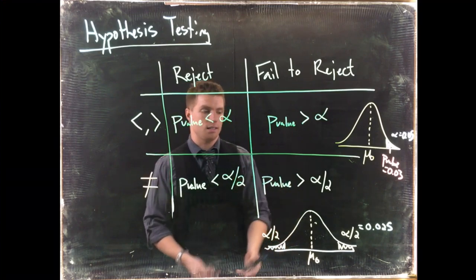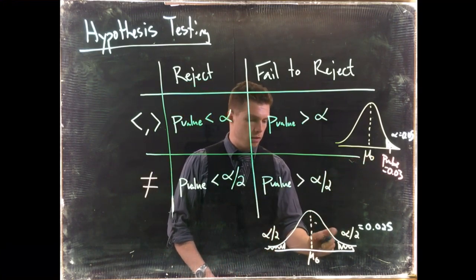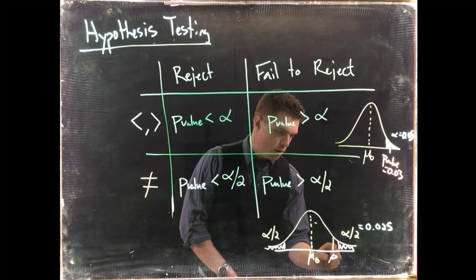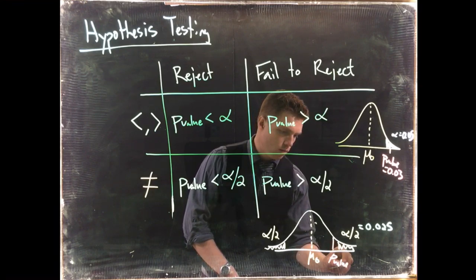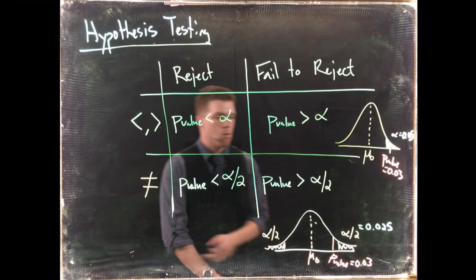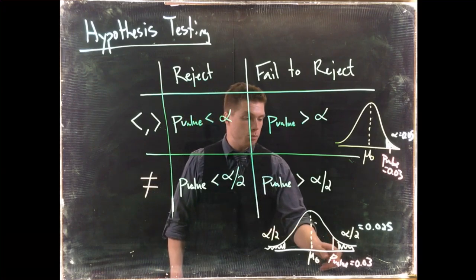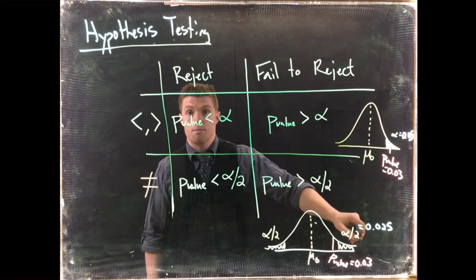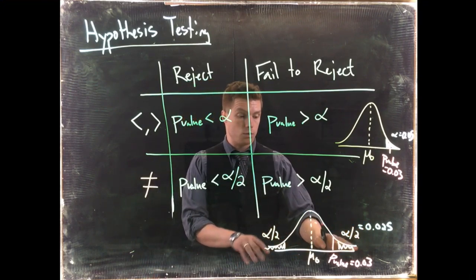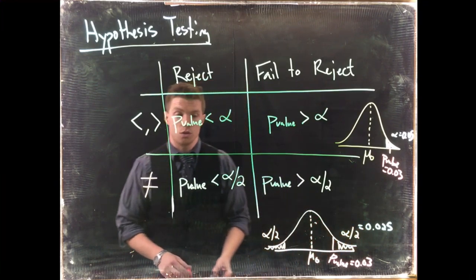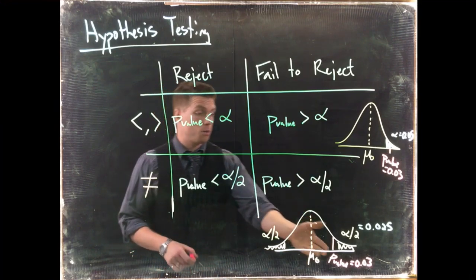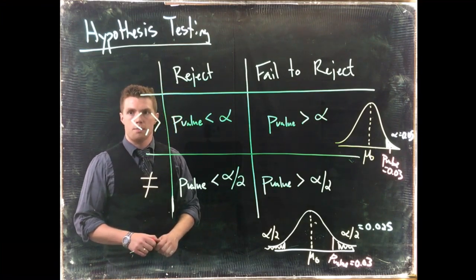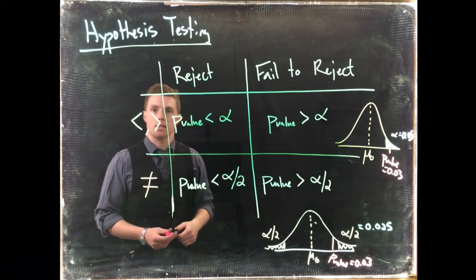If we had done a two tail test instead, we would need to compare our p-value, so let's put up that p-value again of 0.03. Here we would say this p-value is 0.03, which actually is greater than our alpha divided by two. Because we put error on both sides, we have to compare it to the error that it's closest to. So now our p-value 0.03 is not enough evidence to reject the null hypothesis.